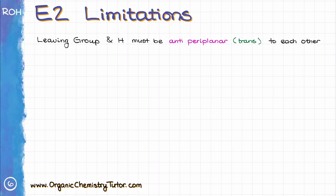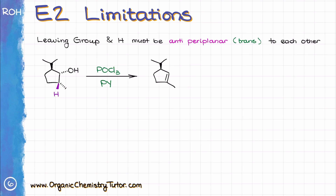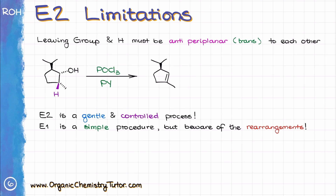Let me illustrate the antiperiplanar limitation with an example. In this reaction, the only hydrogen available for elimination is the one on the same carbon as the methyl group, so our product will have the alkene going down from the carbon where the OH used to be. Since the E2-style dehydration proceeds under much gentler conditions than E1 reactions, it tends to be more tolerant of other functional groups in the molecule. This can be a very important consideration when planning a multi-step synthesis.